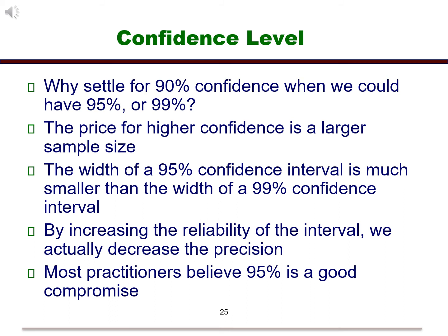Notice that we have chosen 90% as our confidence level. Why settle for 90% confidence when we could have 95 or 99? To get a 99% confidence interval with the same width as a 90% confidence interval, we would need a larger sample size. The width of a 95% confidence interval is much smaller than the width of a 99% confidence interval. By increasing the reliability of the interval, we actually decrease the precision. We will be adding more values to the interval that are not needed. Most practitioners believe 95% is a good compromise for a confidence level.